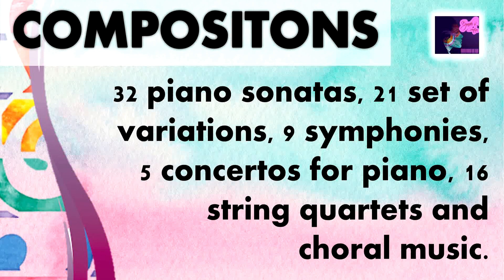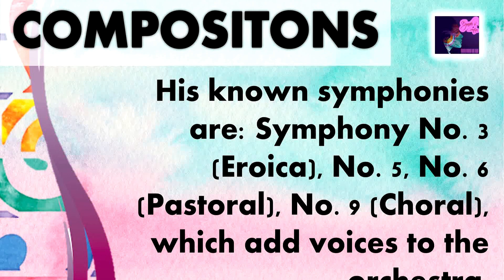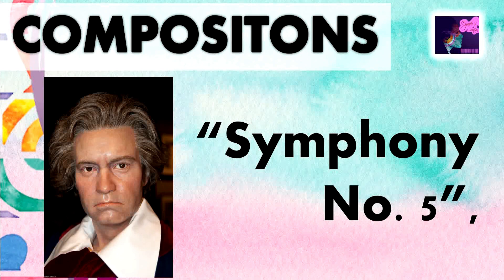He has 32 piano sonatas, 21 sets of variations, 9 symphonies, 5 concertos for piano, 16 string quartets, and choral music. His most known symphonies are Symphony No. 3, 5, 6, and 9, which adds voices to the orchestra. And who can forget Symphony No. 5? — da da da DAN. Yes, it was the composition of none other than the great Ludwig van Beethoven.